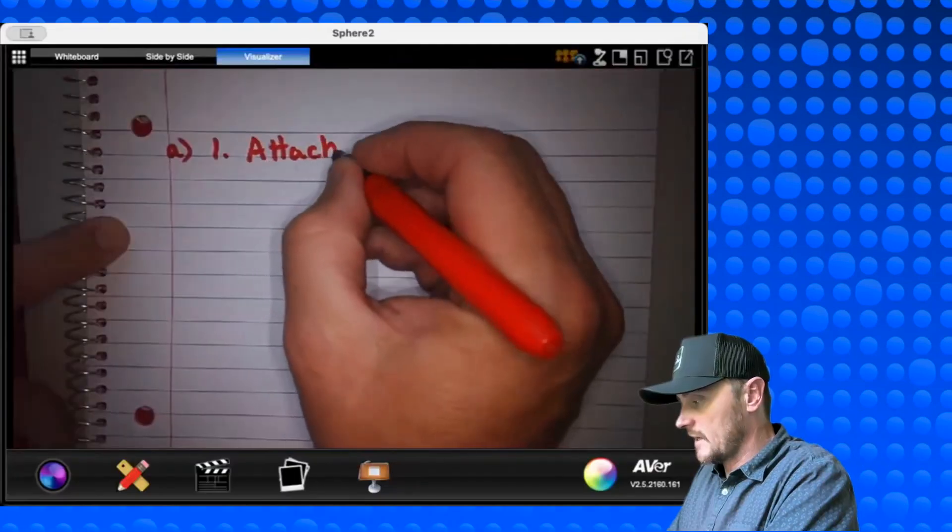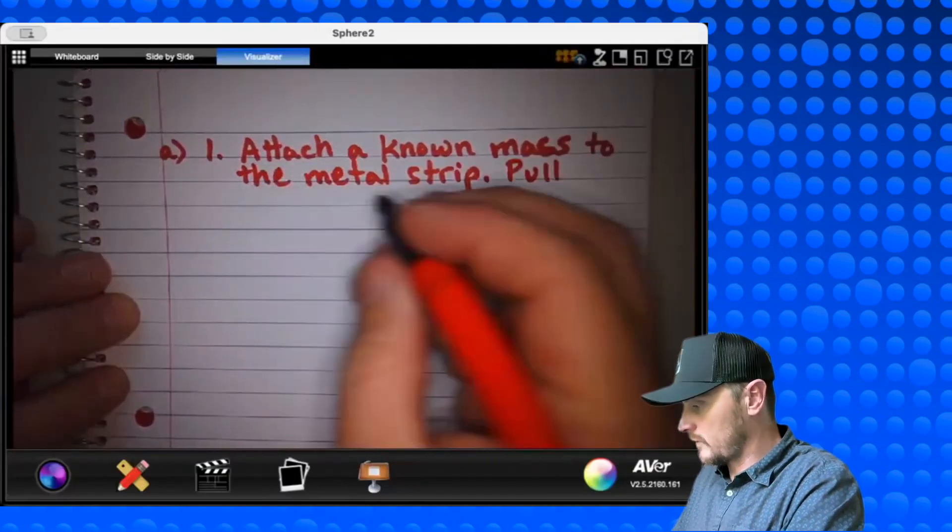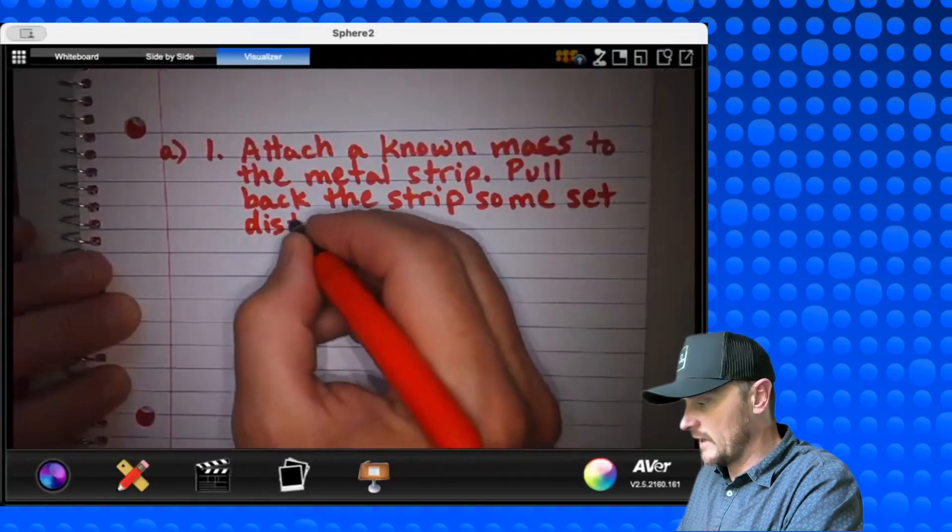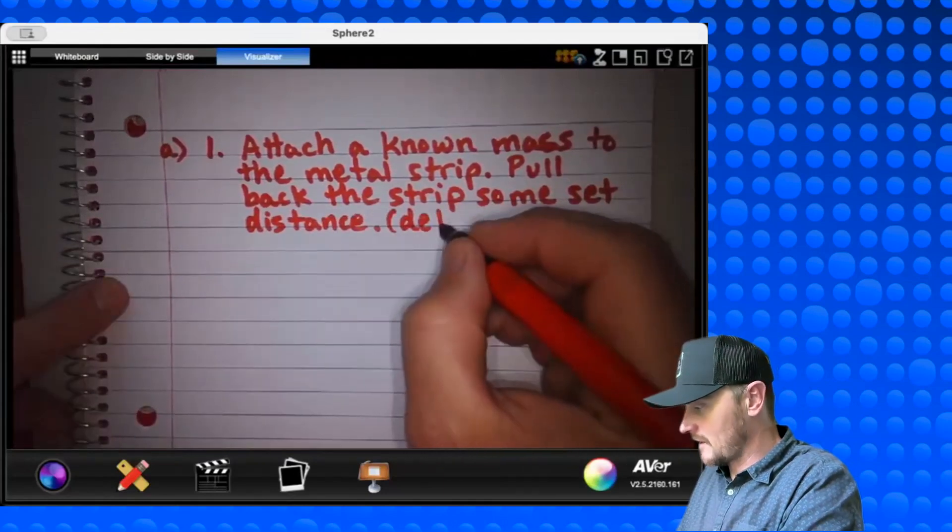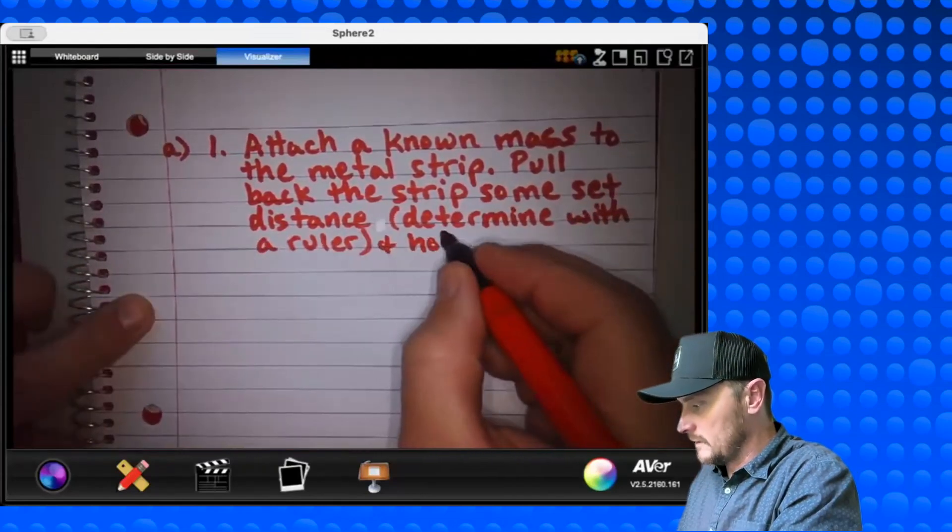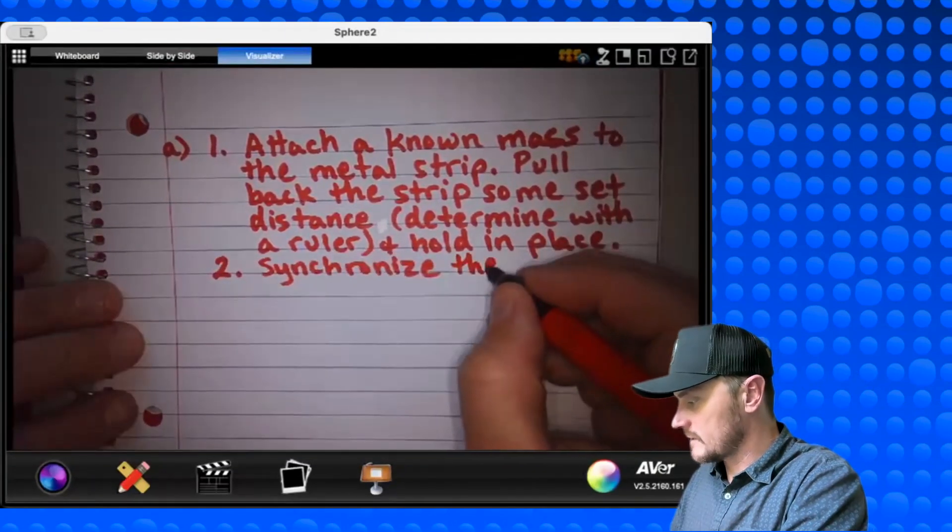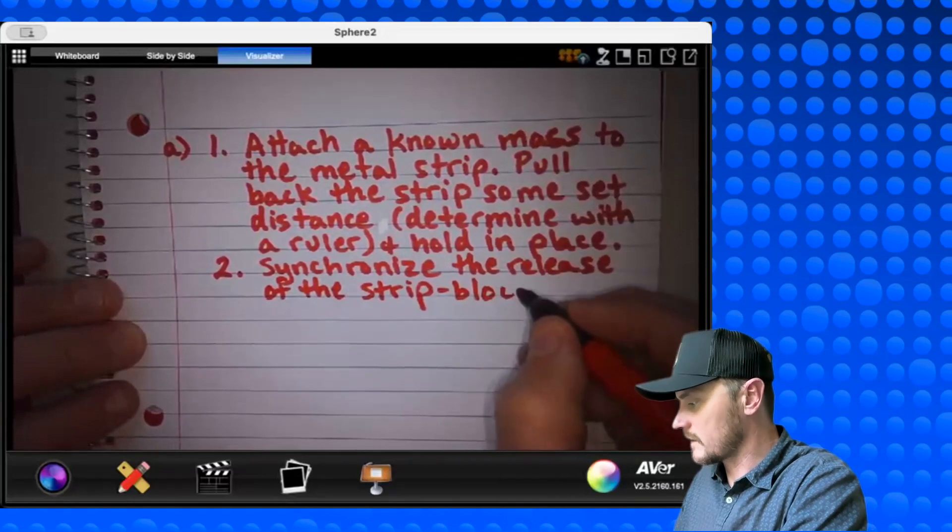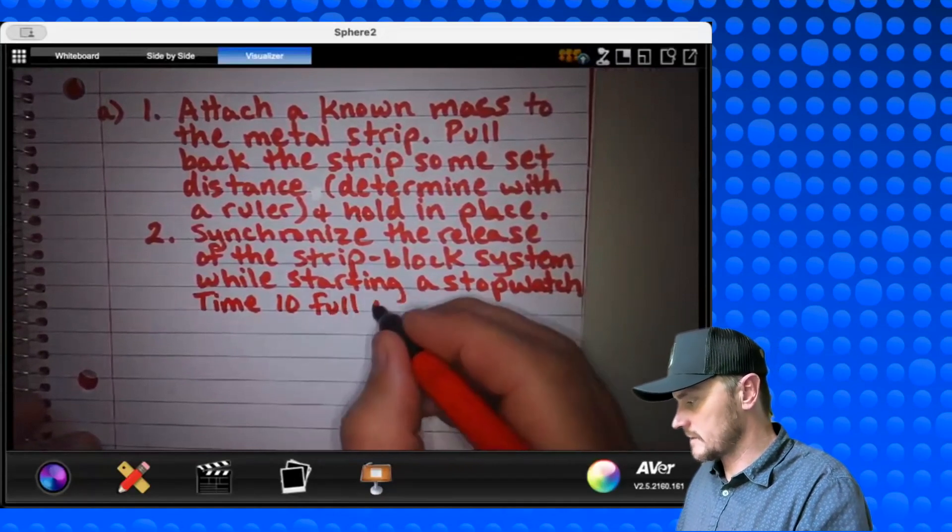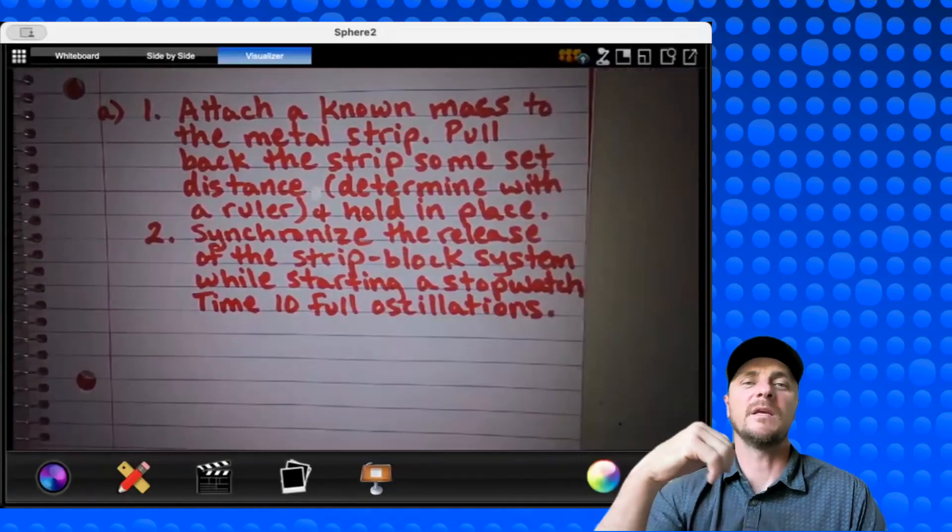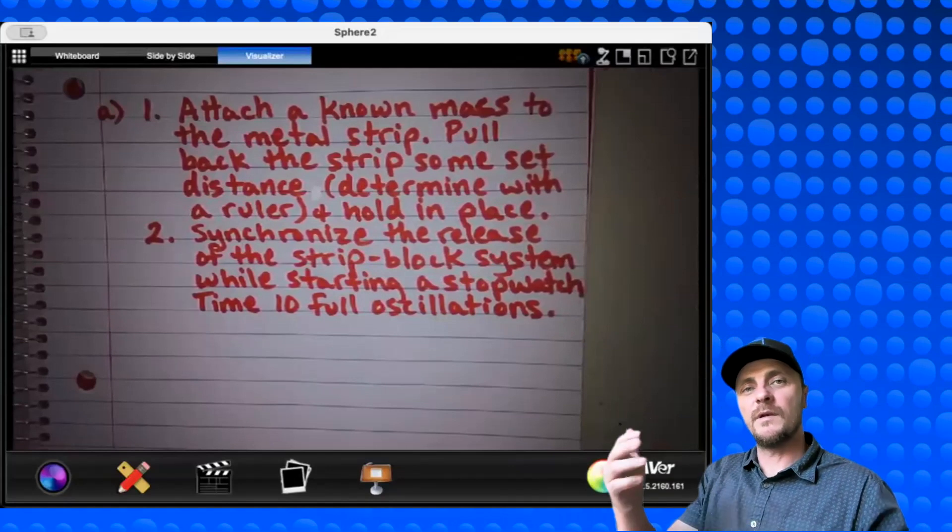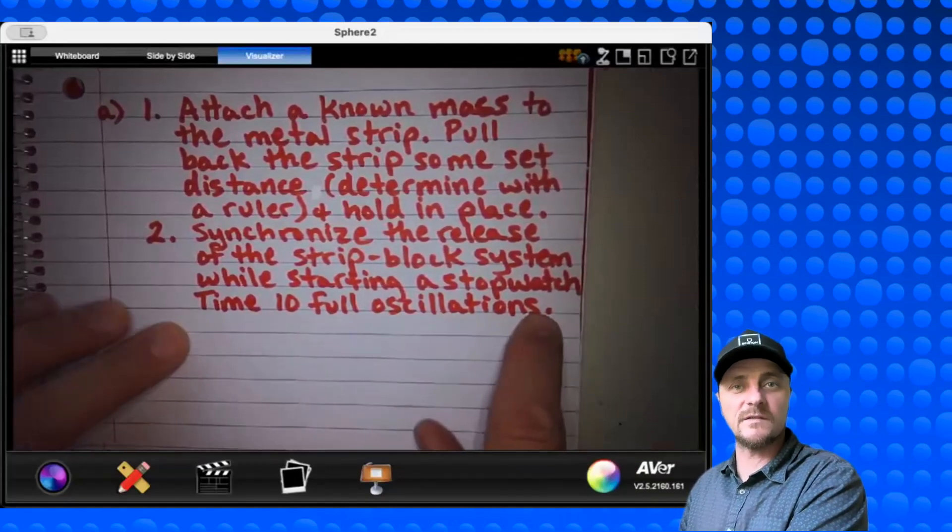So here's what our procedure looks like. Attach a known mass to the metal strip. Pull back the strip some set distance. This is a distance that you need to repeat for every single trial that we're about to do. And just to make sure they're not going to ding me for not being detailed enough, I'll say determine with a ruler and hold in place. Number two, synchronize the release of the strip-block system while starting a stopwatch. Time 10 full oscillations.